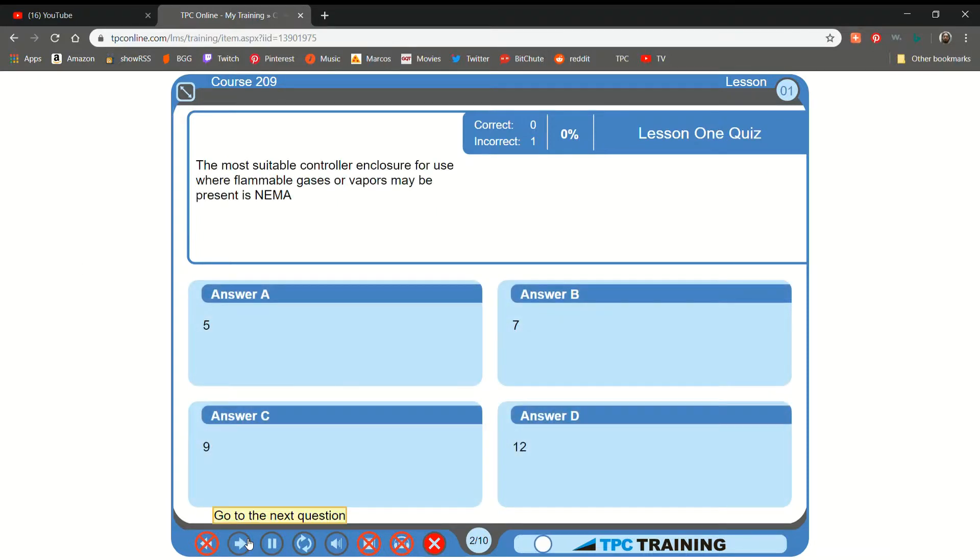The most suitable controller enclosure for use where flammable gases or vapors may be present... Is NEMA... A. Five... That is not correct.